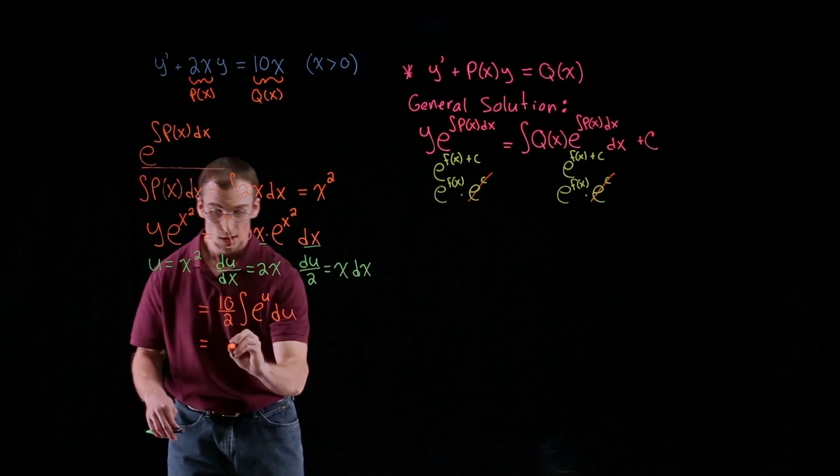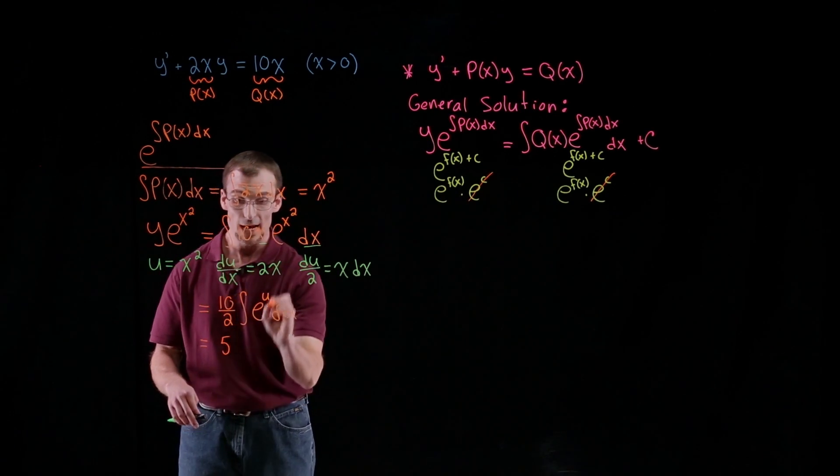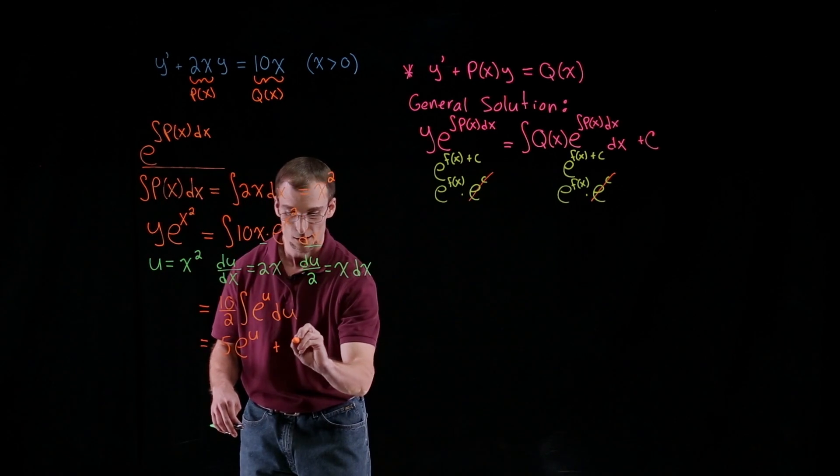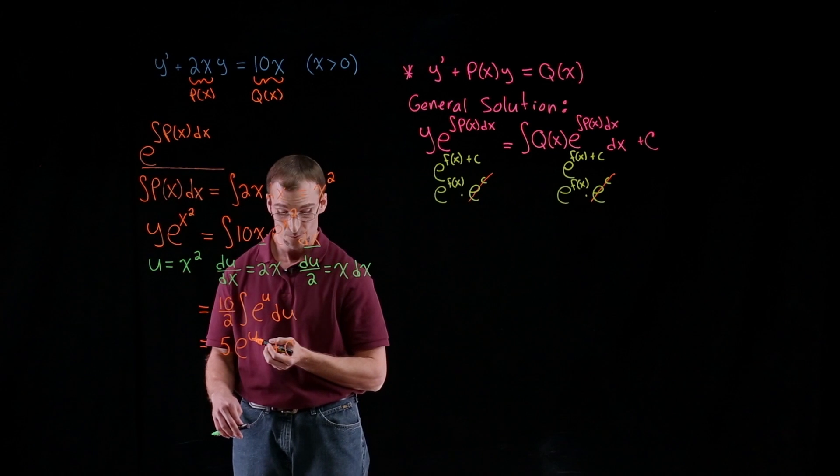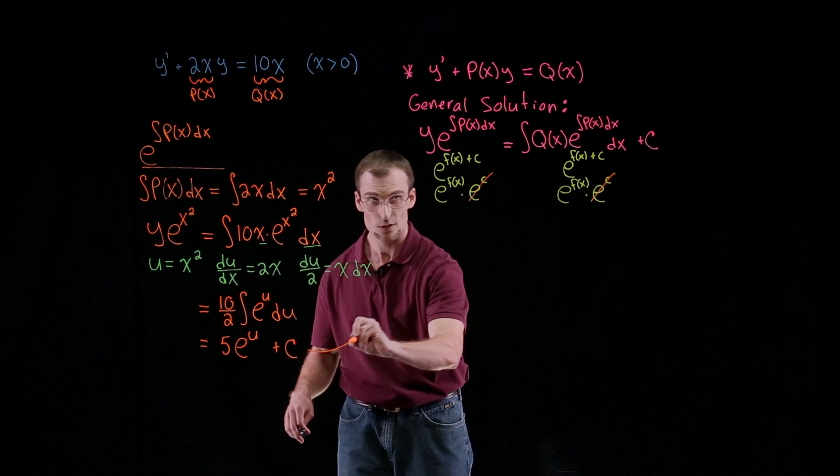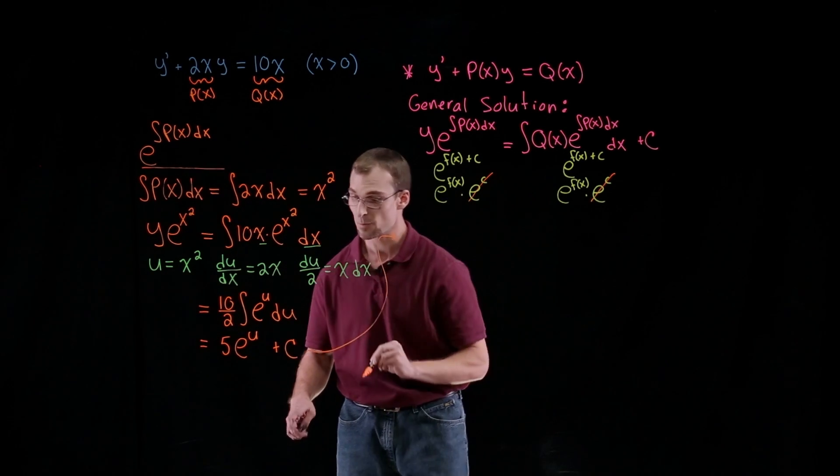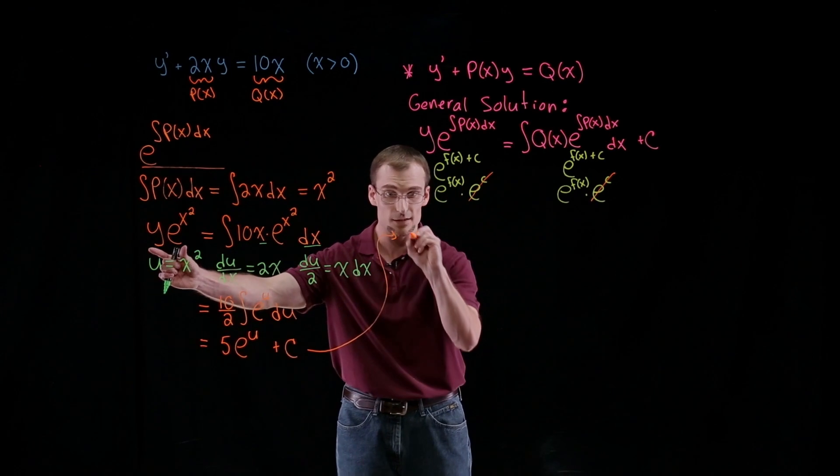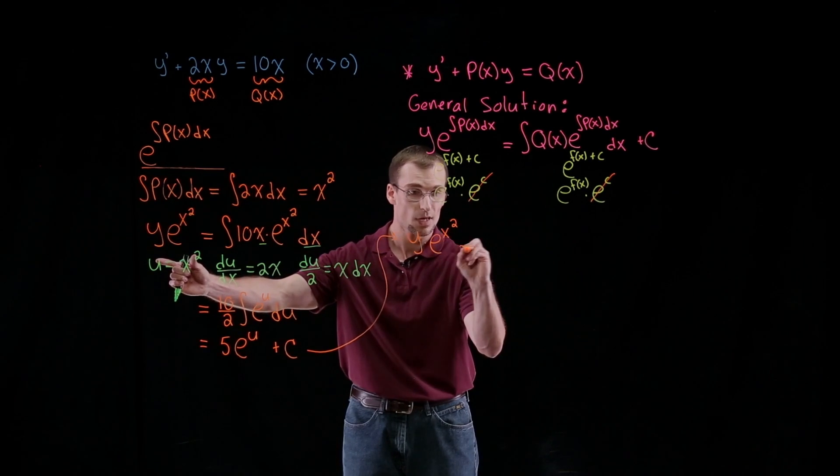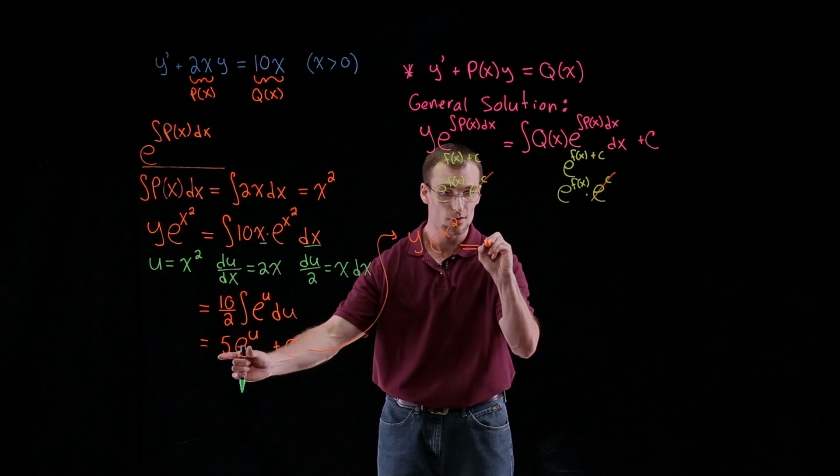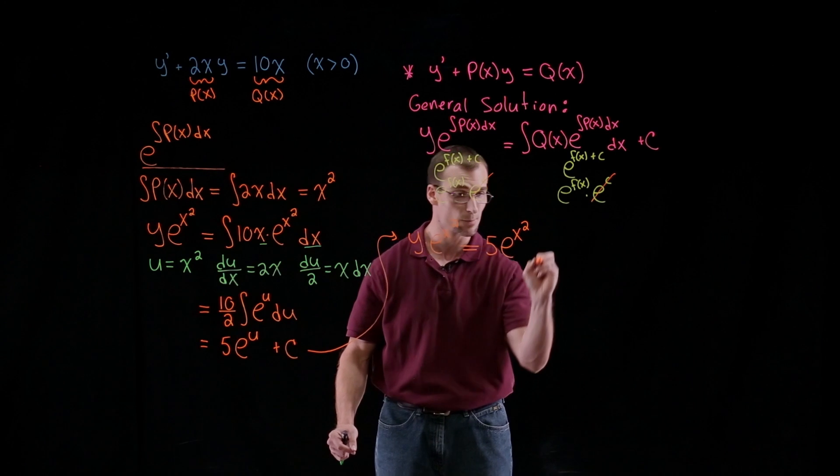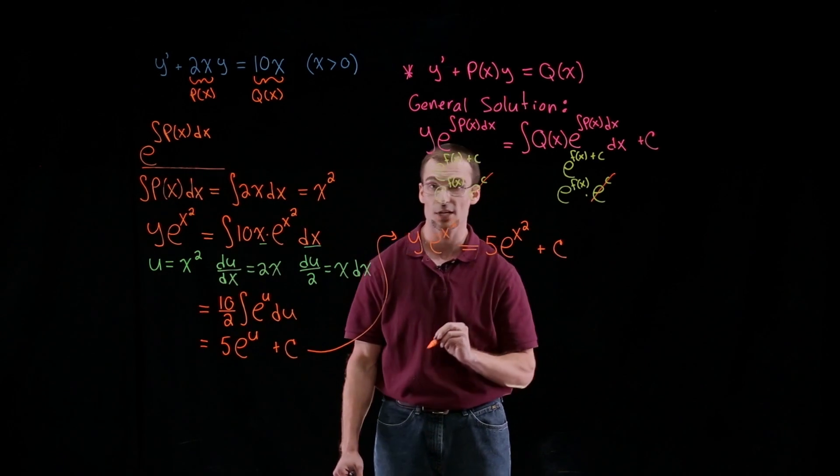And, of course, that is equal to 10 divided by 2 is 5. Antiderivative of e to the u is just e to the u. And now we'll add on our general constant c. OK. So let's put this together and continue to simplify. So what we have in the left-hand side, y times e to the x squared is equal to 5 times e to the x squared. We're re-substituting our u for x squared. And plus our general constant c.